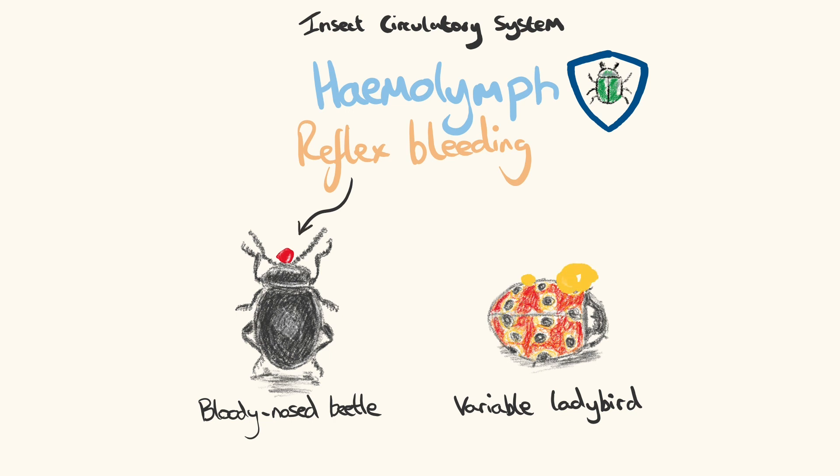Substances which alter the taste, odor, or toxicity of haemolymph are dissolved within, acting as a repellent to ward off predators. Many insects with reflex bleeding mechanisms also show aposematic coloration.